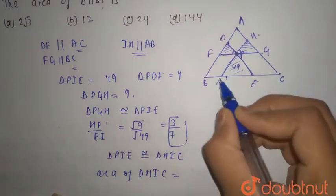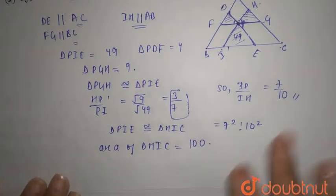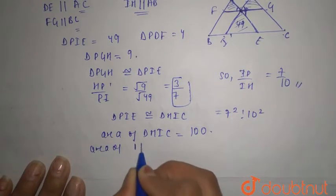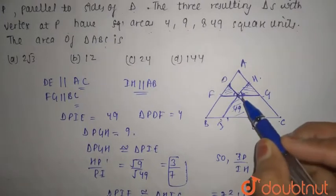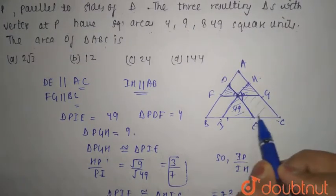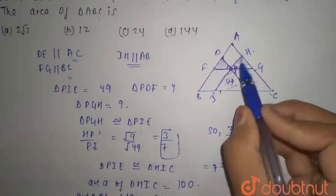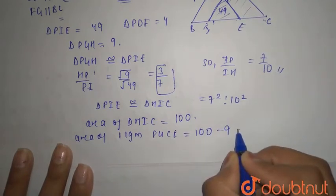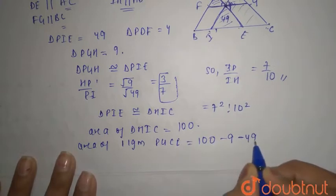The area of triangle HIC is 100. When we deduct the area of triangle PGH, which is 9, and also the area of triangle PIE, which is 49, we get the remaining area.